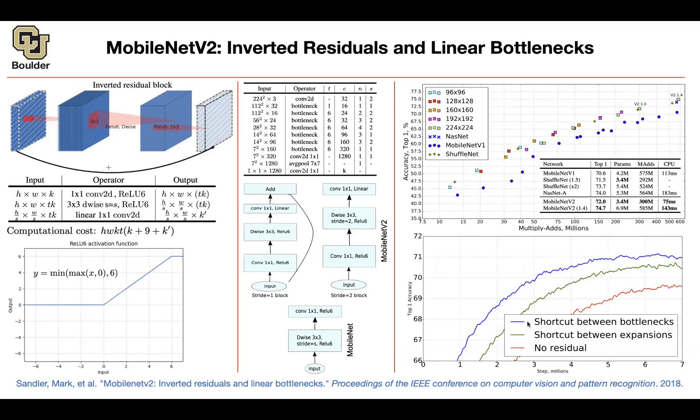Now, here is the question. Should we put a shortcut between bottlenecks, the smaller ones, or should we put a bottleneck between the expansion layers, here and the next one? Or should we forget about residual connections altogether?